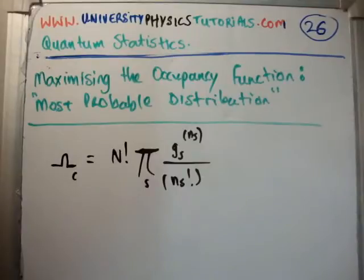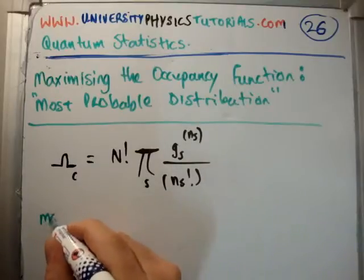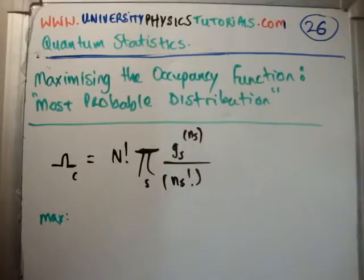Now, this is for classical particles, of course. I'm just putting it there for completeness. Now, a small bit of mathematics. In order to maximize a function, what we need to do is we need to differentiate it and set it to zero.